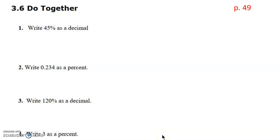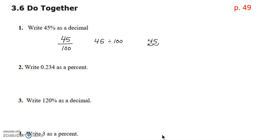Let's do a few questions together. You can pause the video and try them on your own, then check with my solutions. Number one: writing 45% as a decimal. We're going from percent to decimal, so we're dividing — putting 45% over 100. You can use a calculator, or move the decimal two places to the left. So 45% as a decimal is 0.45.